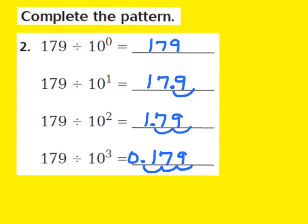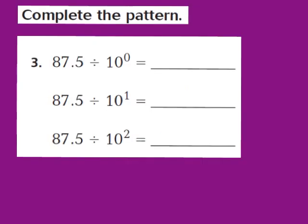Once again, as you divide by increasing powers of 10, the decimal point moves one place to the left for each increasing power of 10. Now let's take a look at question number three. What I notice is that in this problem, my divisors all have exponents: the zero power of 10, the first power of 10, and the second power of 10. I'm going to use my knowledge of exponents to help me solve this problem.